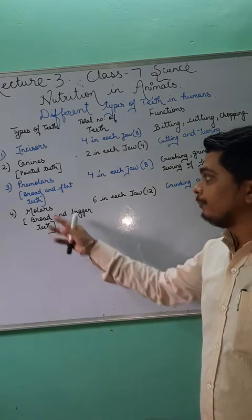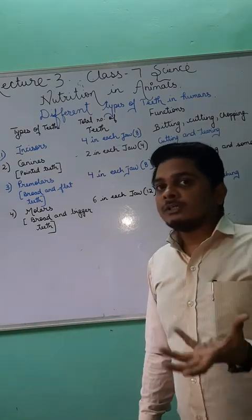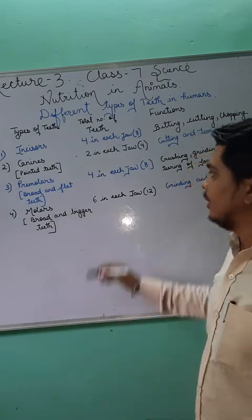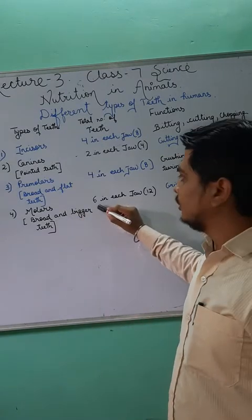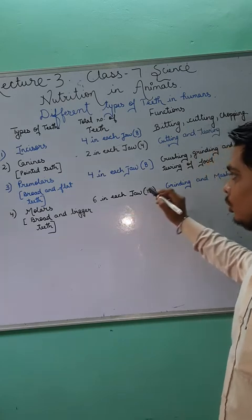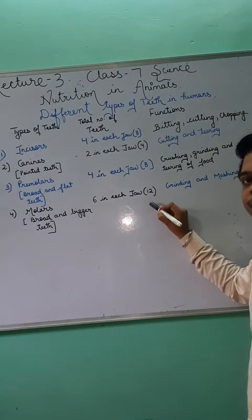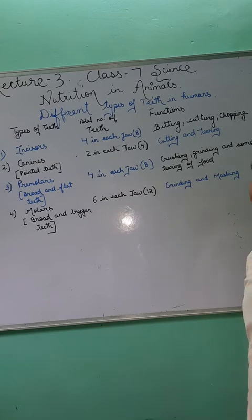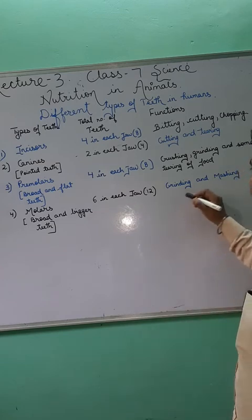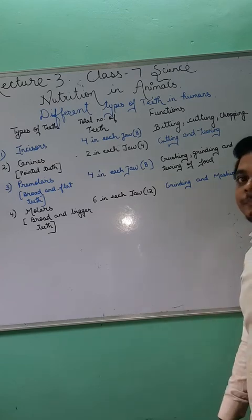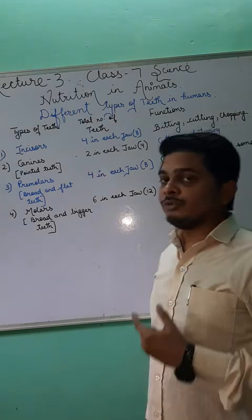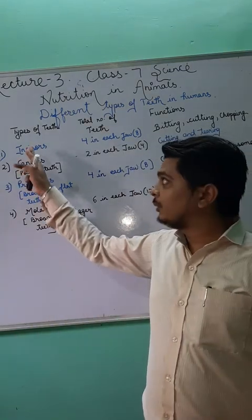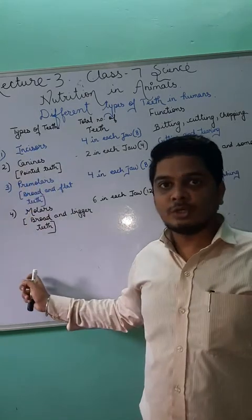The molar teeth are broad and bigger teeth. There are six molar teeth in each jaw, and combining both jaws we have twelve molar teeth in total. The function of molar teeth is grinding and meshing. Students, you have to remember these teeth in order, and also have a clear understanding of their structure.